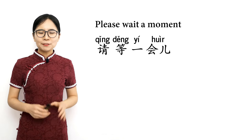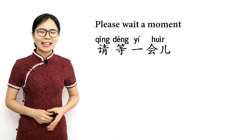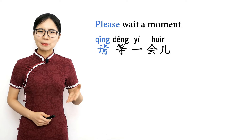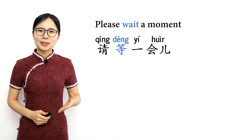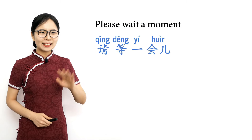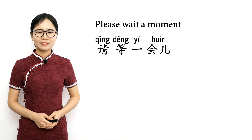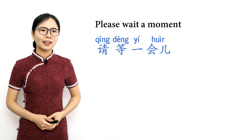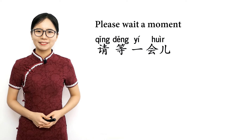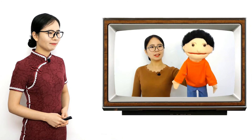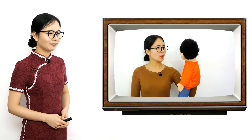If you need someone to wait for you for a moment, you can say 请等一会儿 — please wait a moment. 请 means please, 等 means wait, and 一会儿 means a moment. Please repeat after me: 请等一会儿, 请等一会儿 — please wait a moment. 咱们走吧 — let's go. Oh, I need to find my keys. 请等一会儿 — please wait a moment.